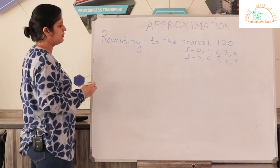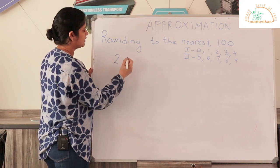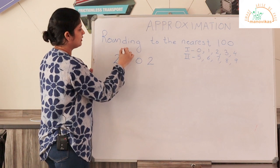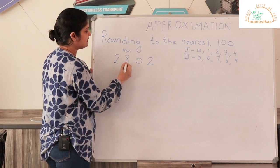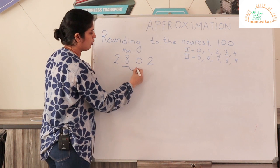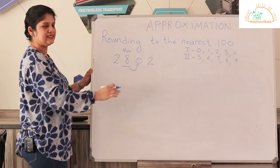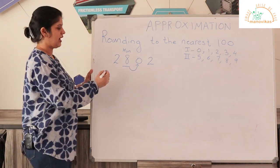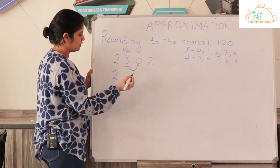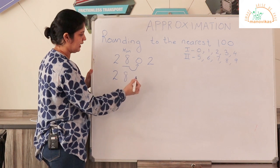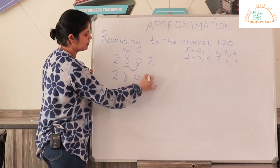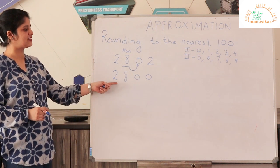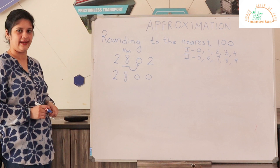Let us take another example: 2802. My digit in the hundreds place is 8. The digit following it is 0. 0 is in the first range, so the hundreds place will not change and remain as it is. So the number will be 28 followed by two 0s. So 2802 rounded to the nearest 100 is 2800.